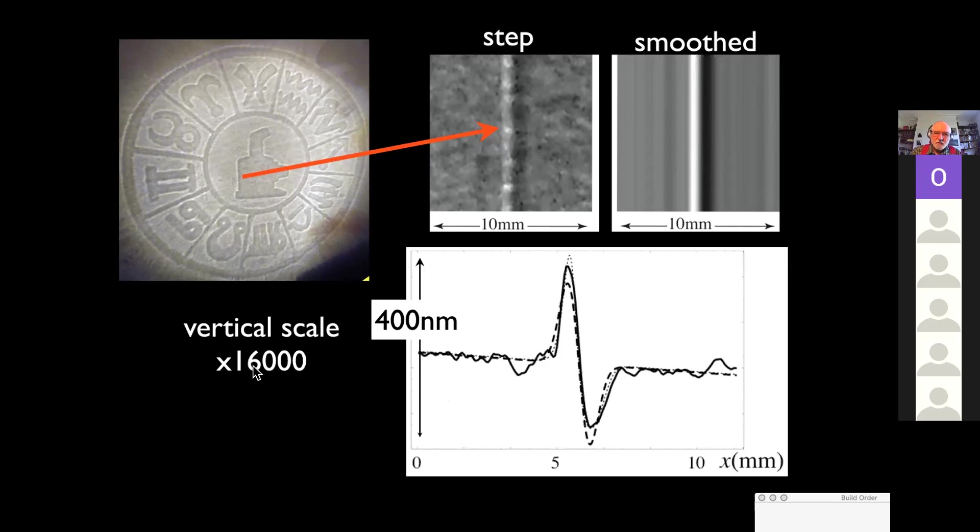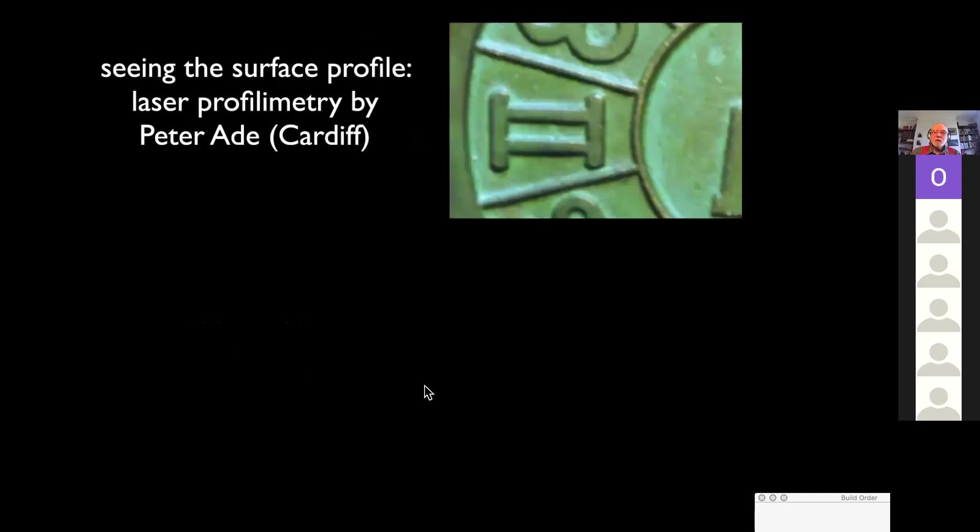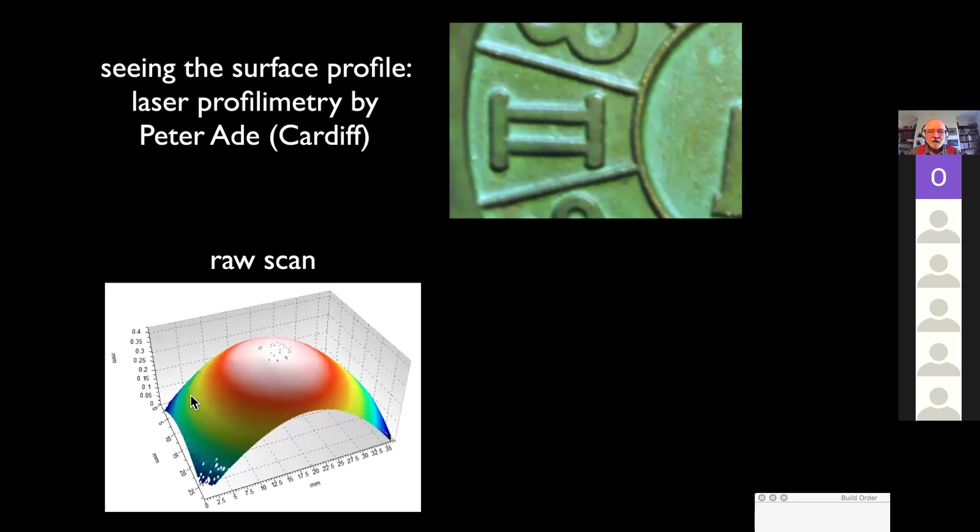I've magnified the vertical scale by 16,000 to make this picture. Now, this confirms that the theory is correct. But it would be good to actually see the steps on the surface of the mirror. And for this, I went to somebody in a nearby university, Peter Ade, whose job is testing astronomical mirrors using laser profilometry. So I took my magic mirror to him and said, please, can you scan this with your system and see the hope to see the steps on the surface of the mirror?